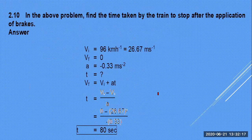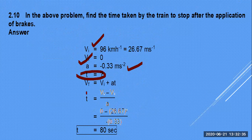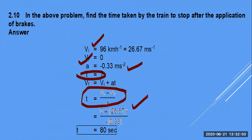To find the time taken for the train to stop: final velocity is zero, acceleration is already calculated. Use Vf = Vi + at, rearranging for t. When velocity and acceleration are both given, the first equation of motion is the easiest to calculate time.